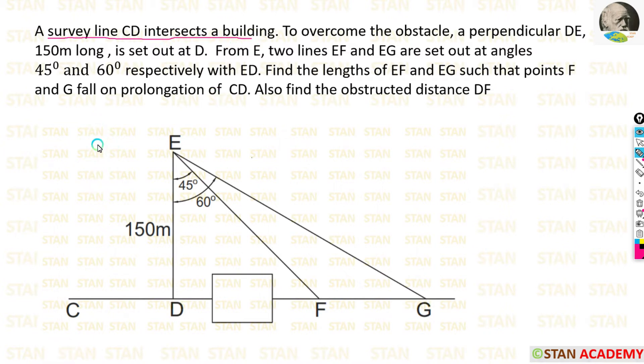Based on this data we can draw the diagram. A survey line CD intersects a building. To overcome the obstacle, a perpendicular DE, 150 meters long, is set out at D. So at the point D we are making one perpendicular DE at 150 meters. Perpendicular means the line at 90 degrees. So this perpendicular is made at the point D.